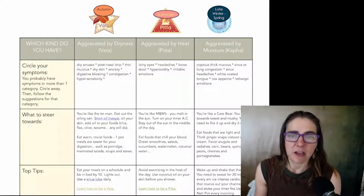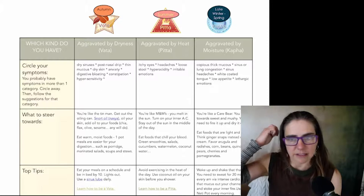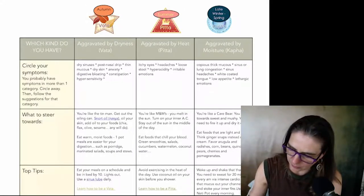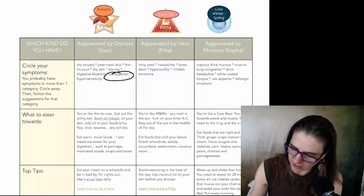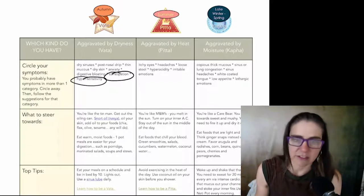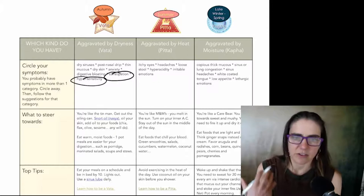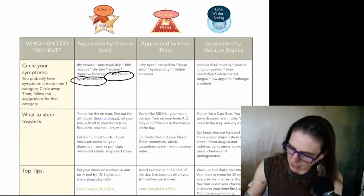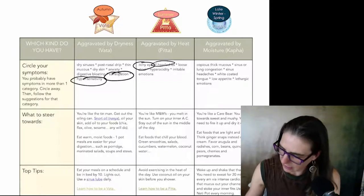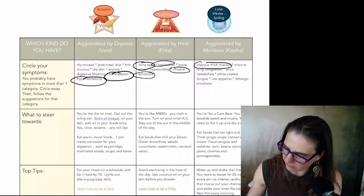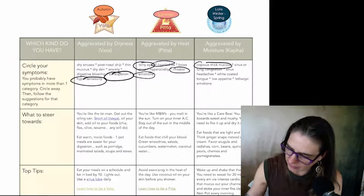And I ask you on this to circle your symptoms. And then I start to guide you to what to steer towards, and what are my top tips. The reason I want you to go into this is it just kind of helps you see like, where are my groupings of symptoms? So when you circle which symptoms you have, if we just go back to the example that I had before, I had constipation. So that would have been under a Vata type symptom. I did have hypersensitivity. My nervous system was very sensitive to the environment. I was allergic to dogs and cats and dust. I had itchy eyes, I had headaches, I had irritable emotions.